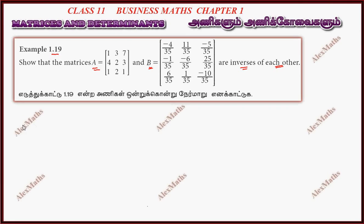If we multiply A into B equal to identity, and B into A equal to identity, then A and B are inverses of each other.